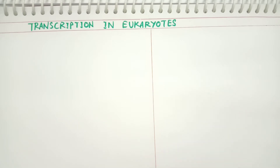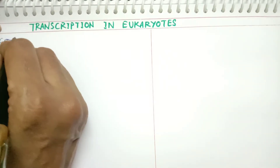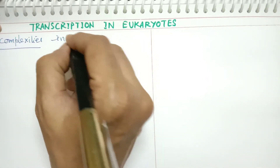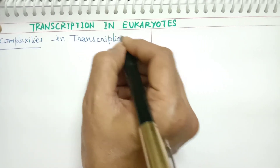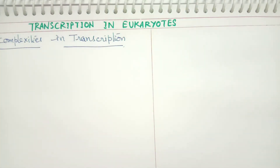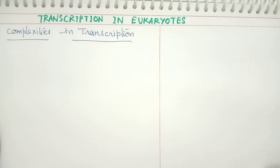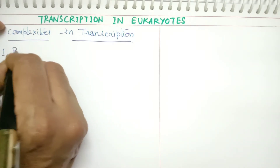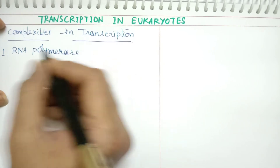So, let us discuss the complexities in transcription in the case of eukaryotes. The process involves the same initiation, elongation, termination, and same factors — rho factor and sigma factor — except for these complexities found in eukaryotes. The first complexity is with respect to the enzyme RNA polymerase.